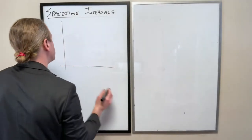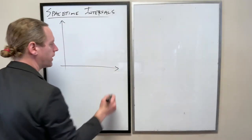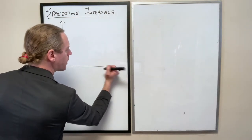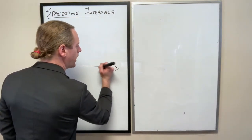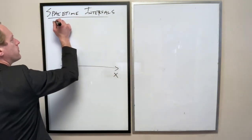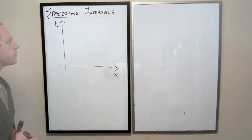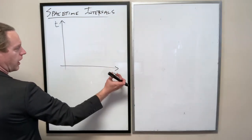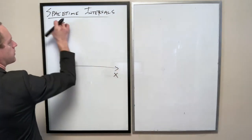So I'm going to redraw the Minkowski diagram here. And again, we have space here. And I'm going to call this, I'm just going to think of it directly as x now.